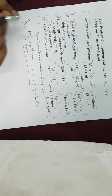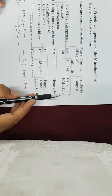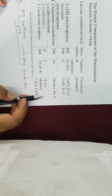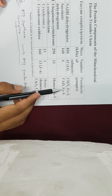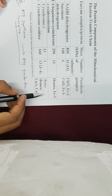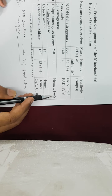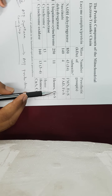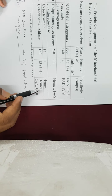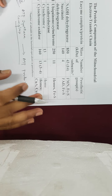We need to remember the different prosthetic groups present in all these complexes, because they play a very important role in the transfer of electrons. In the next class, we are going to discuss all these electron carriers and their features. Thank you.